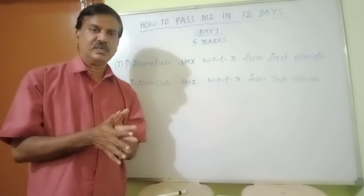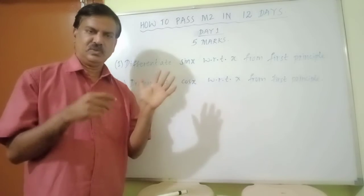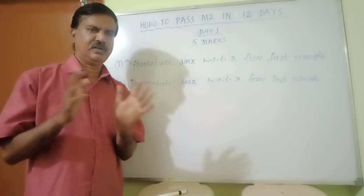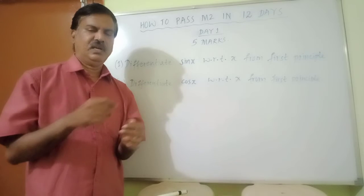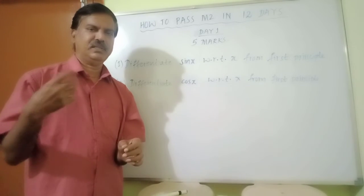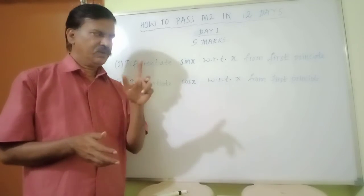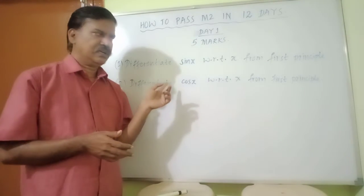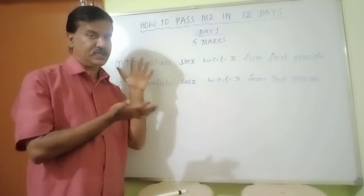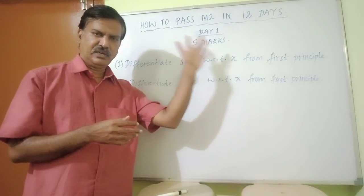You have almost 100%. If you have 4xx, you can get 100% of the 5xx. The other question is CASEX. The CASEX is the same as CASEX. If you have 2 formulas, you can get 100%.